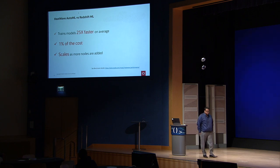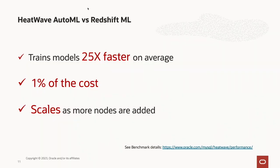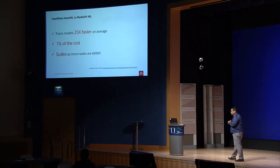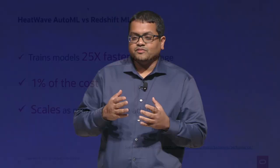A quick comparison against the competition: on average HeatWave ML trains models 25 times faster than Redshift ML, compared across a wide variety of datasets with tens of millions of rows and hundreds of columns. For some datasets we are hundreds of times faster. HeatWave ML requires only a few nodes to be this fast, which is why the cost compared to Redshift ML is only 1% — if it costs $1 to train on Redshift ML, it costs one cent on HeatWave ML, and you get a more accurate model. HeatWave ML will automatically scale as more nodes are added.